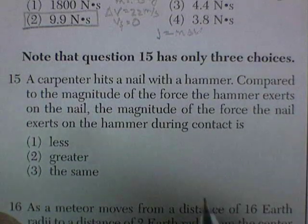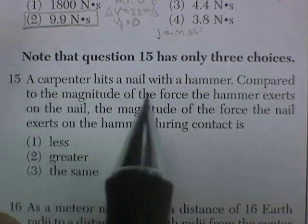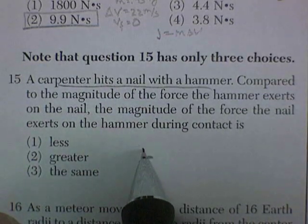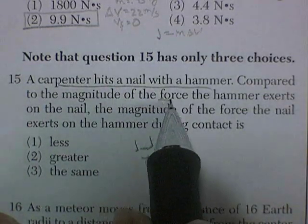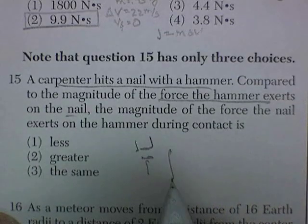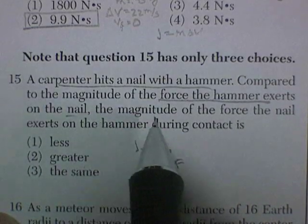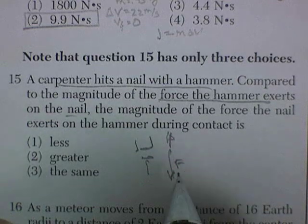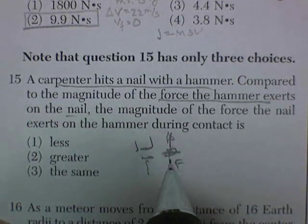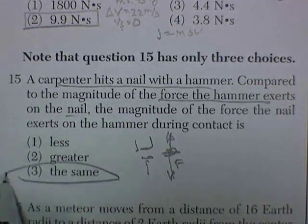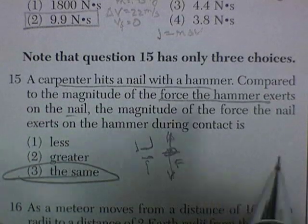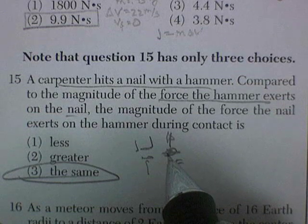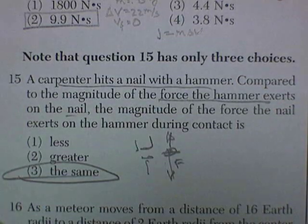Question 15. A lot of questions are worded this way: a carpenter hits a nail with a hammer. Compared to the magnitude of the force the hammer exerts on the nail, the magnitude of the force the nail exerts on the hammer — this is Newton's Third Law. For every action force there's an equal and opposite reaction force. The correct answer is the same. The nail does some moving because of transfer of momentum; however, the force at contact is the same for both.